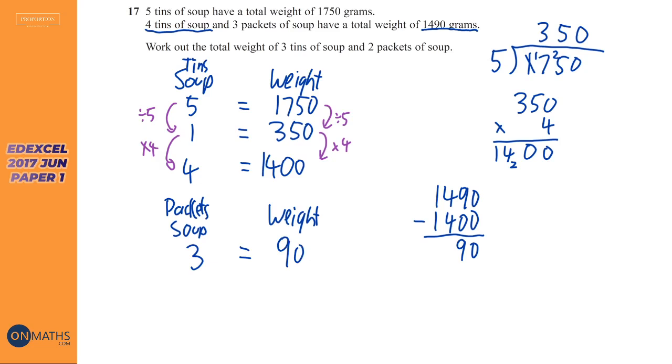And it's saying work out the total weight of three tins of soup and two packets of soup. So let's get one packet of soup. So we need to divide this by three. We can do this in our head. So one equals 30. And so we've got one tin of soup, which is here. So one tin of soup is here. And one packet of soup is here.